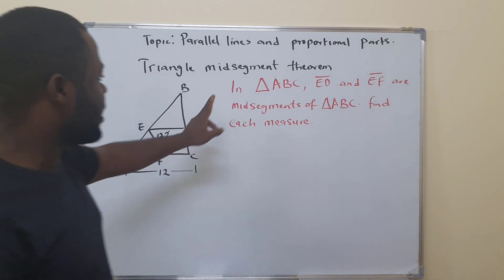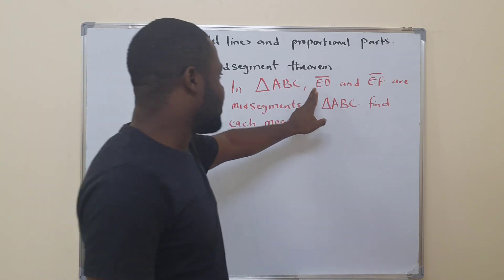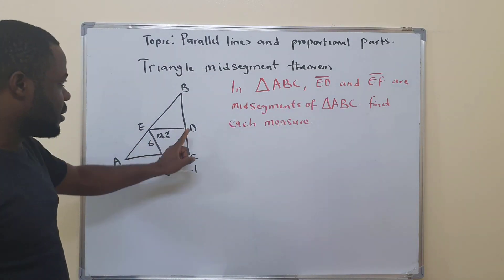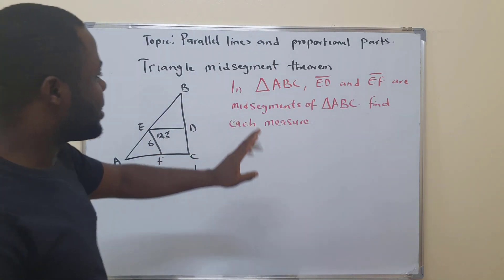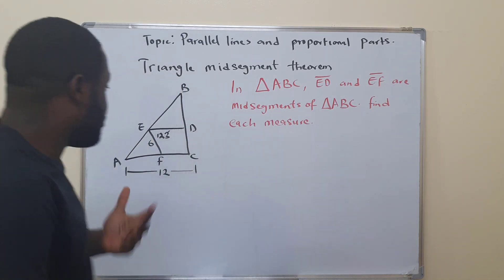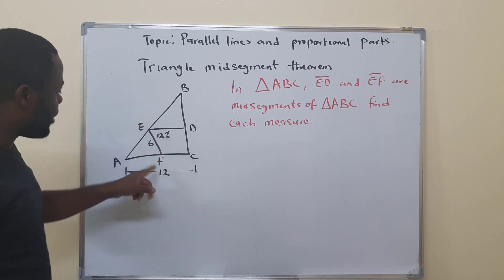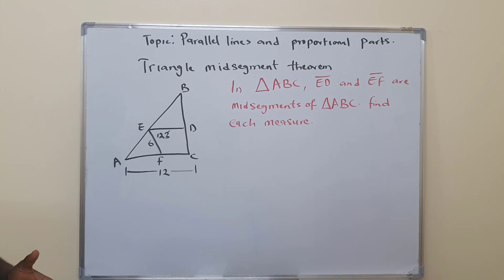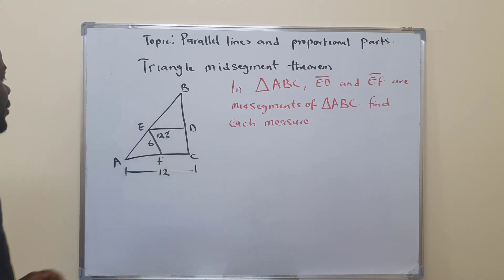We are told that in triangle ABC, line segments ED and EF are midsegments in this triangle, and we're asked to find each measure. They say that ED and EF are midsegments of this triangle. So we are asked to find the measure of this side and this side of the triangle. Let's see how it goes.